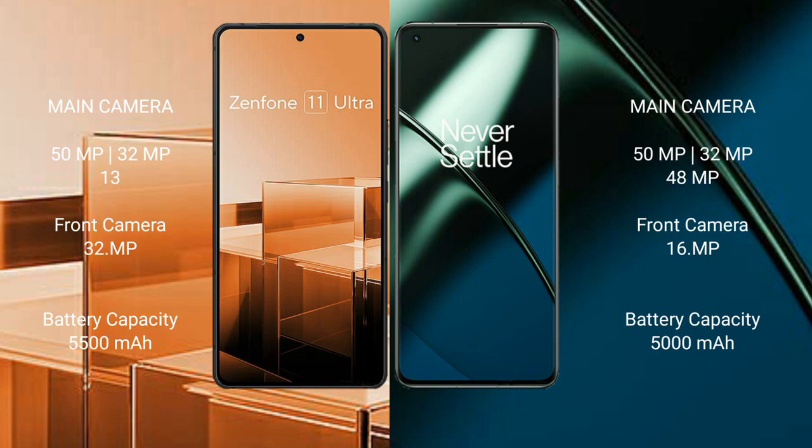The Asus Zenfone 11 Ultra has a 5500mAh battery with 65W fast charging support, while the OnePlus 11 has a 5000mAh battery with 100W fast charging support.